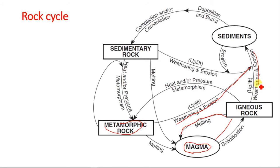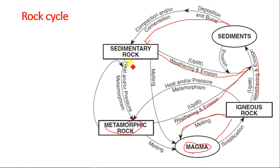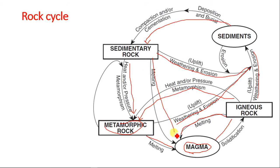Metamorphic rocks can also be weathered and transported to form sediment, as can sedimentary rocks. Each of these sediments is transported to the seabed, where burial, cementation, and compaction lead to the formation of sedimentary rocks. Sedimentary and igneous rocks exposed to high heat and pressure can lead to metamorphic rock through a process called metamorphism. These metamorphic rocks, along with sedimentary and igneous rocks, can all be melted back to magma, which erupts to form igneous rock — and the cycle continues.